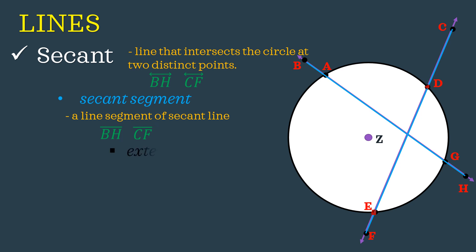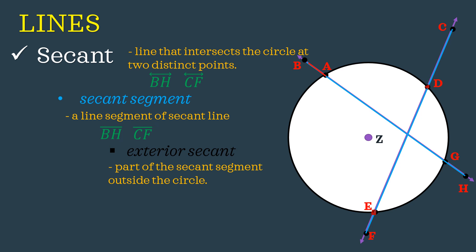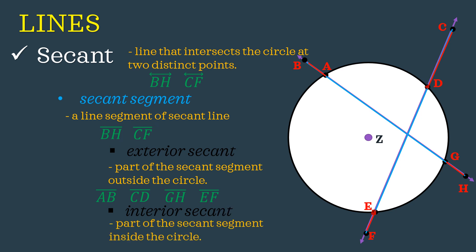Under secant segment, we have two subcategories. The first is the exterior secant — a secant segment that appears outside our circle. We have four pieces: line segment BA, line segment EF, line segment GH, and also line segment CD. The counterpart is the interior secant — the line segment that appears inside our circle which is part of our secant line. These are line segment DE and also line segment AG.